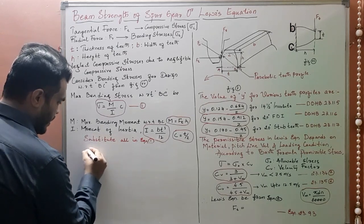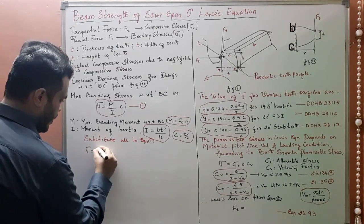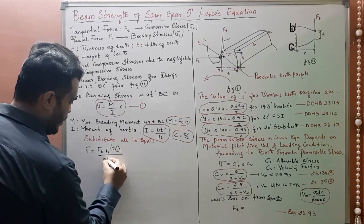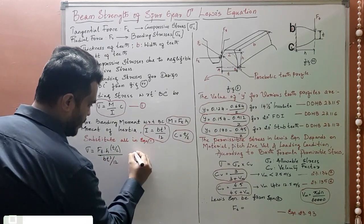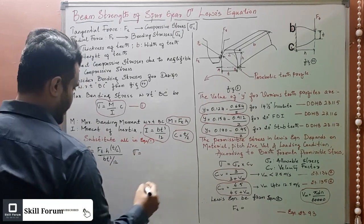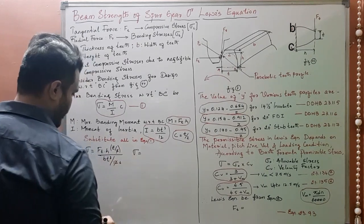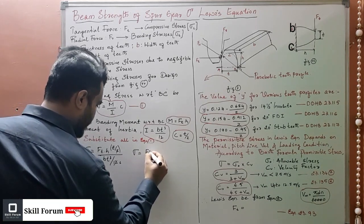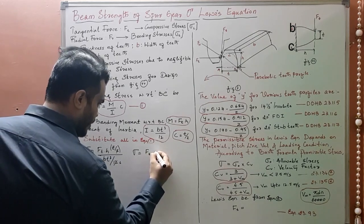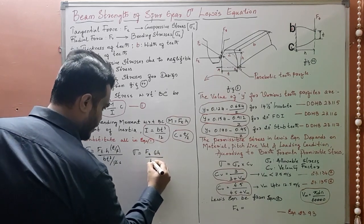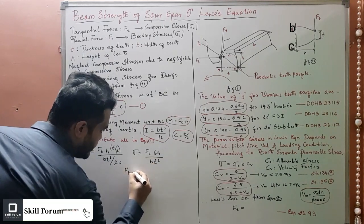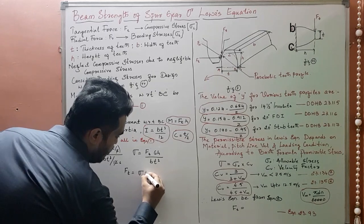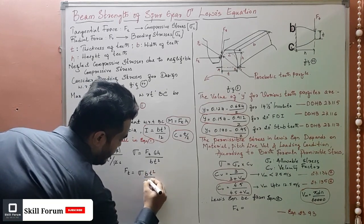Substituting into equation one: σ = (Ft × h × (t/2)) / (bt³/12). Once we simplify, the t terms cancel and we get σ = (6 × Ft × h) / (bt²). Therefore, rearranging: Ft = σ × bt² / (6h).